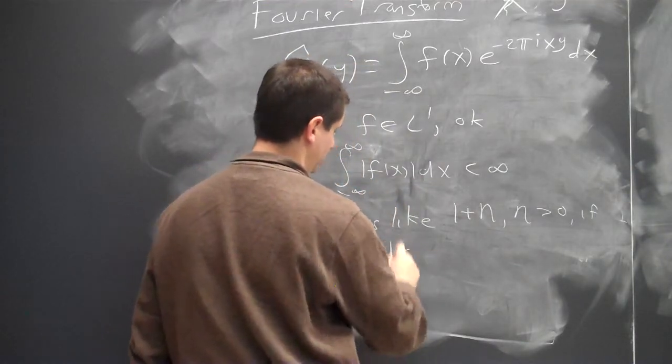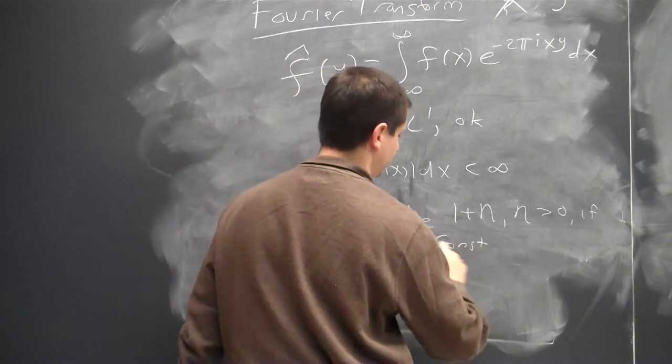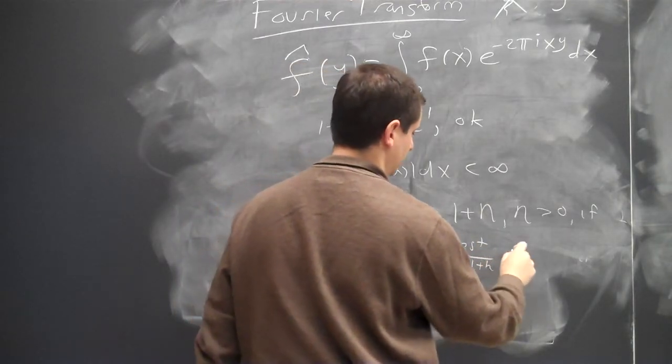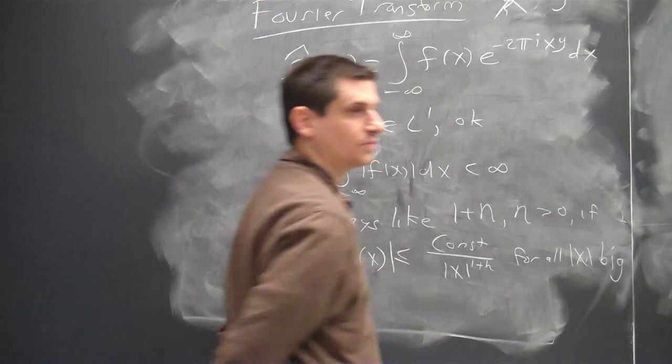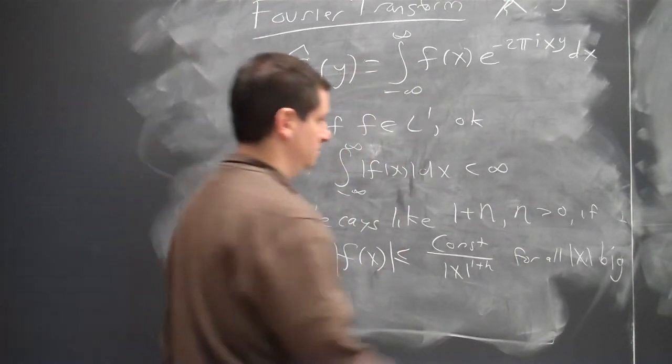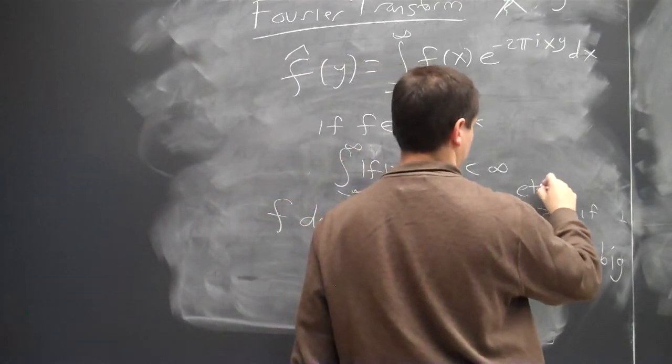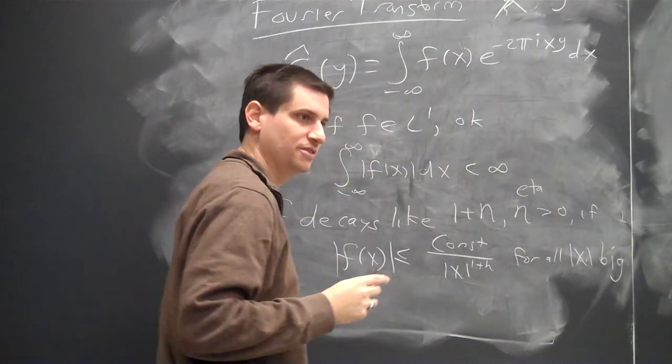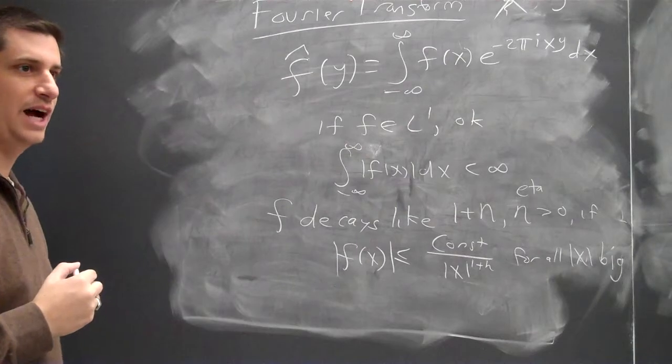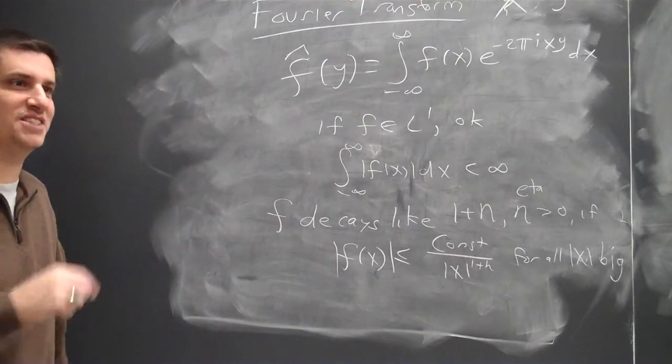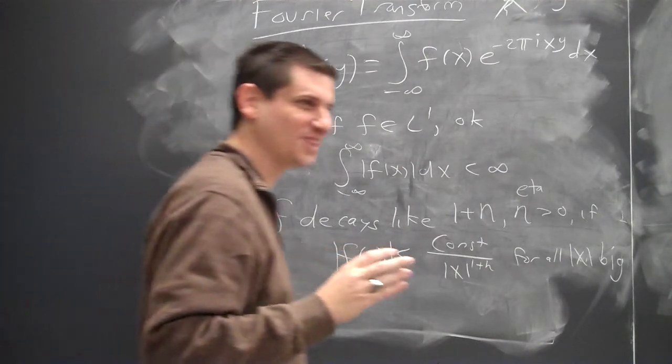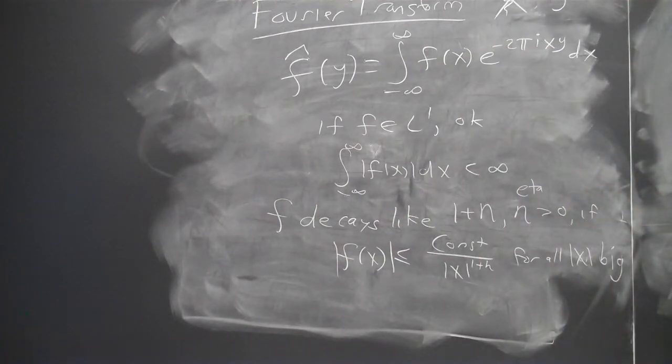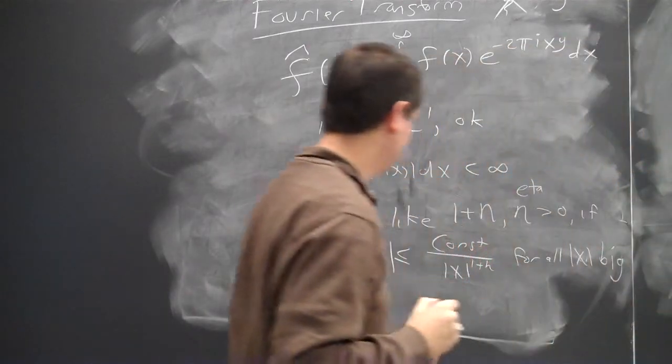F of X is less than or equal to some constant divided by X to the 1 plus eta for all absolute value of X big. What is that thing you keep saying? Eta. Do you want to use deltas instead of etas? No, I mean, it's fine. How many of you know the Greek alphabet? Does it have to be in order? I've done every letter in Latinx in thumbtack. I've used them all in physics. Sometimes in the same equation. You should know the Greek alphabet. It's an eta.